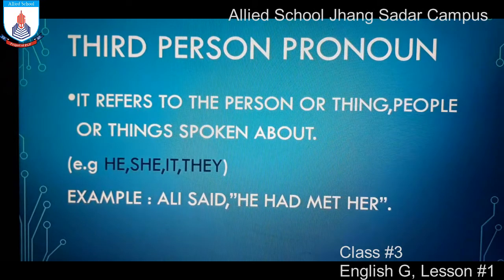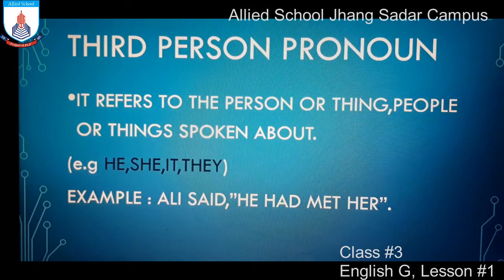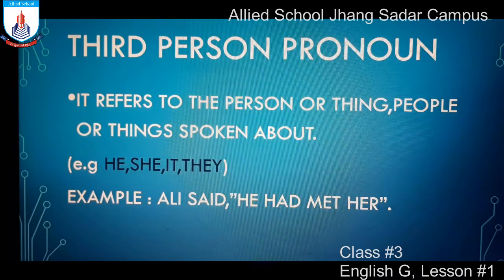Third Person Pronoun refers to the person or thing spoken about — jinn cheezon ya persons ke baare mein hum baat kar rahe hote hain. For example: he, she, it, they. Example: Ali said he had met her. Yaani, woh usse mila. Isne yahan kisi ke baare mein bataya hai.